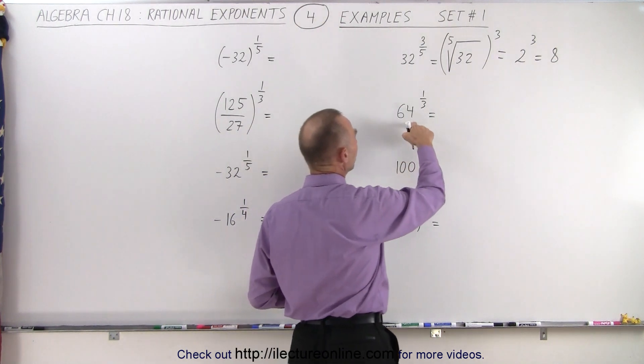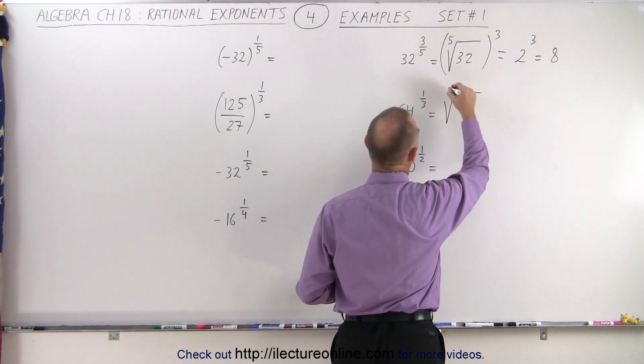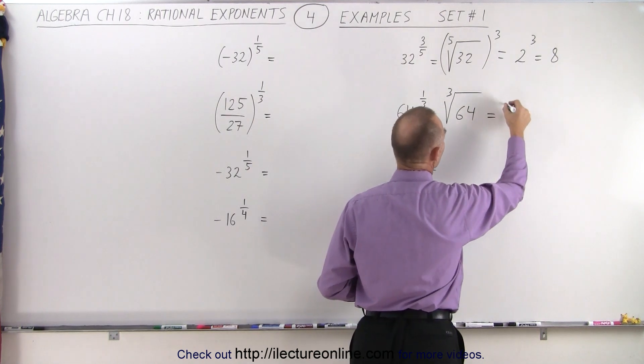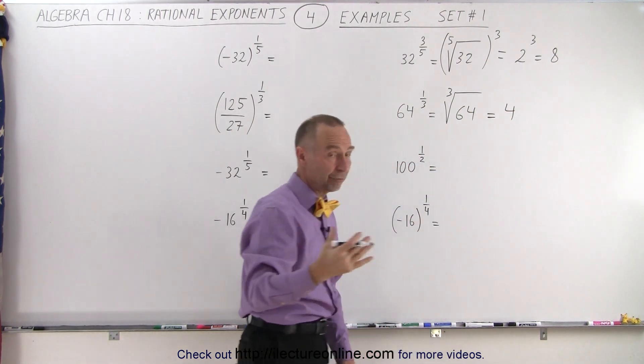First of all, the cube root of 64, so we write this like this. That's not a problem. We know that the cube root of 64 is simply equal to 4, because 4 times 4 times 4 is 64.